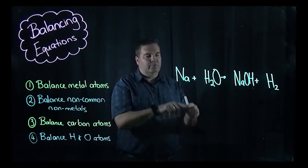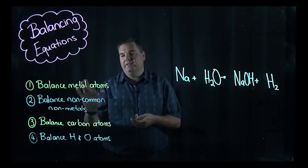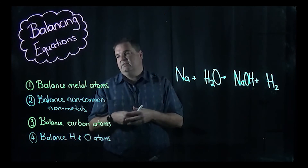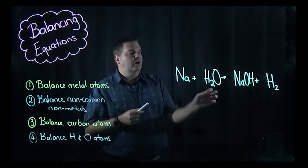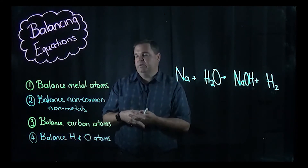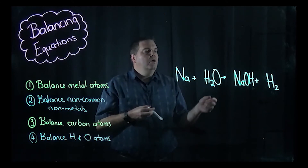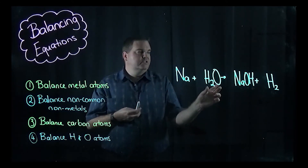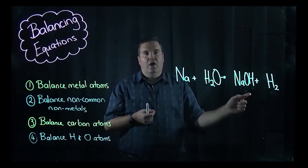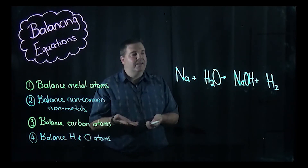You can draw up a table with left-hand side and right-hand side for each atom, but I just follow the steps. Balance metal atoms: one sodium on each side — balanced. No non-common non-metals and no carbon atoms, so skip those steps. Now balance hydrogen and oxygen. Since hydrogen exists in two species on the right side, I start with oxygen — oxygen only appears in one species on each side. One oxygen on each side: balanced.